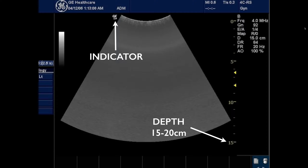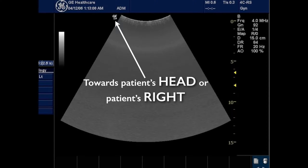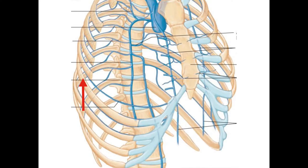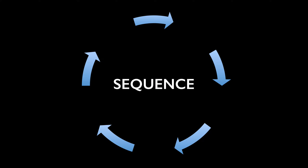The depth is about 15 to 20 centimeters. The indicator for the FAST scan is generally towards the patient's head or right side. If you have obstructive views because of ribs, you can turn slightly counterclockwise to minimize rib interference.